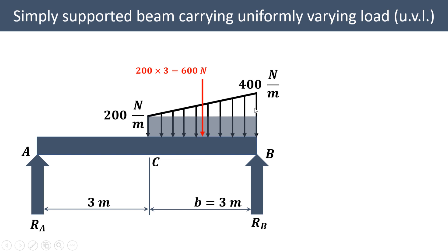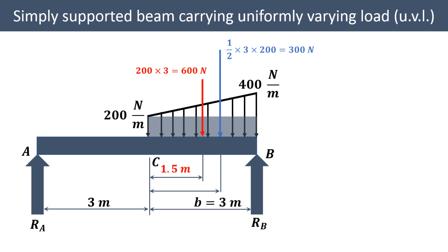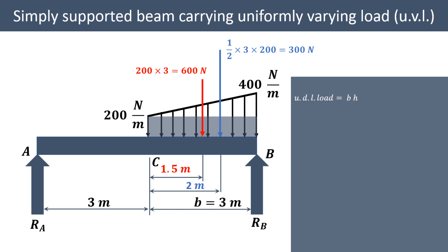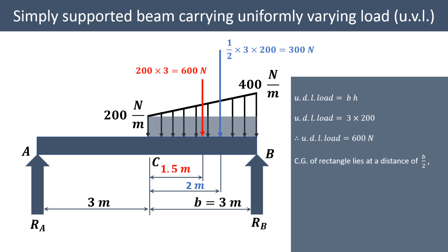So the triangular distribution starts from 0 up to 200 Newton per meter. We have now converted the UDL and UVL into point loads at their respective distances. The UDL load is base into height — base is 3 meters and height is 200 — so it is 600 Newton. The centroid of the rectangle lies at B by 2, that is 3 upon 2, which is 1.5 meters.